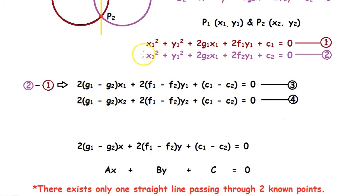we can write a general equation for these two equations. That will be 2(g₁ - g₂)x + 2(f₁ - f₂)y + (c₁ - c₂) = 0.